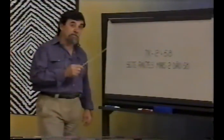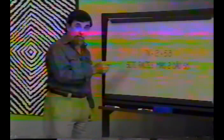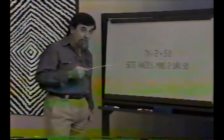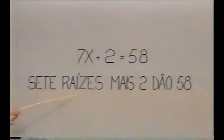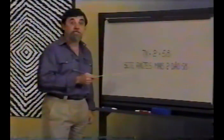Nesse problema da herança, a gente traduziu o enunciado para a linguagem da matemática, armou uma equação na incógnita X, e resolveu a equação usando o método que os árabes desenvolveram, apoiando-se na ideia de operação inversa. Uma curiosidade: embora a ideia desenvolvida por aqueles matemáticos seja exatamente essa, a maneira como eles expressavam isso era completamente diferente. Eles não usavam X — era tudo feito com palavras. Uma equação como 7X + 2 = 58, que nós escrevemos assim, eles escreviam: sete raízes mais dois, dão cinquenta e oito. O que nós chamamos de incógnita, eles chamavam de raiz.